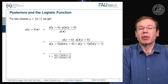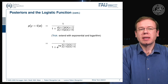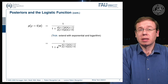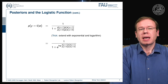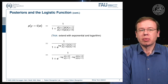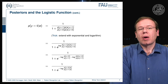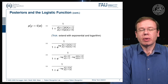We further rearrange by introducing the exponential and the logarithm. Taking e to the power of a logarithm cancels out to one, so nothing changes. Using the logarithm, we can split the fraction into a ratio of prior probabilities and a ratio of class conditional probabilities. Applying Bayes rule, we can rearrange this into a fraction of posterior probabilities.